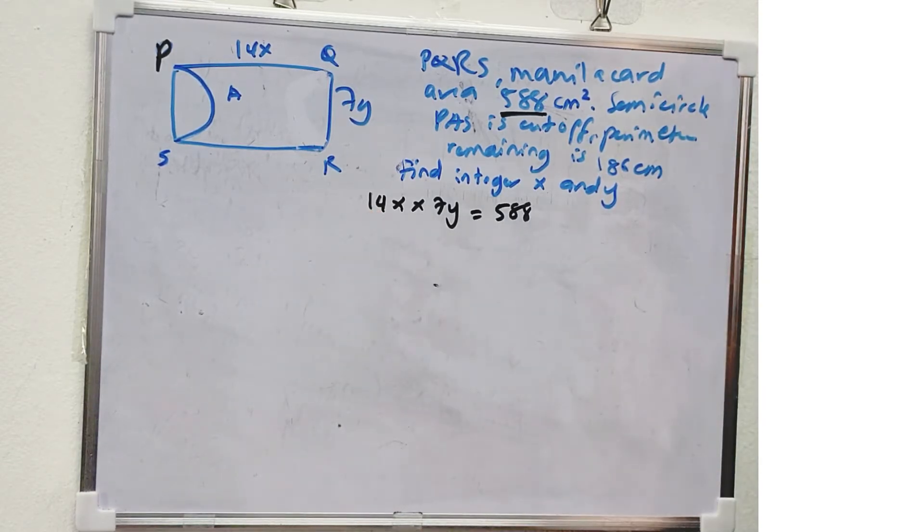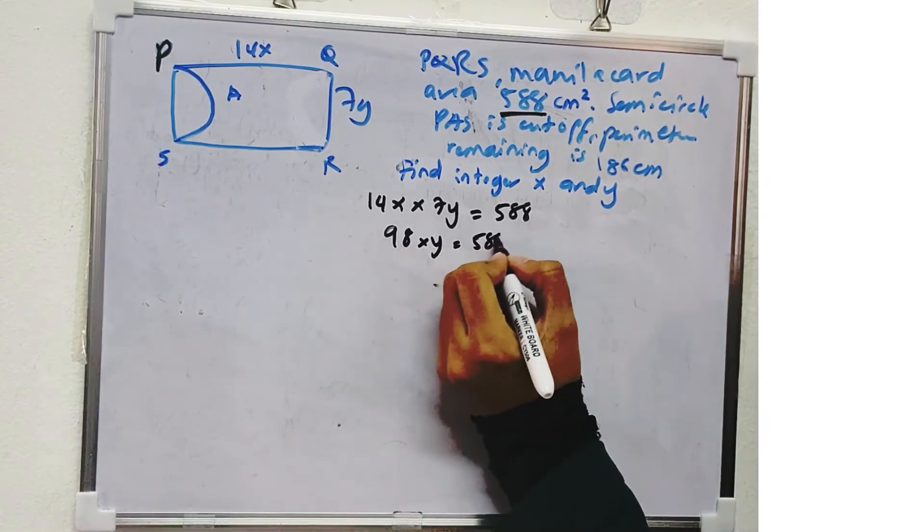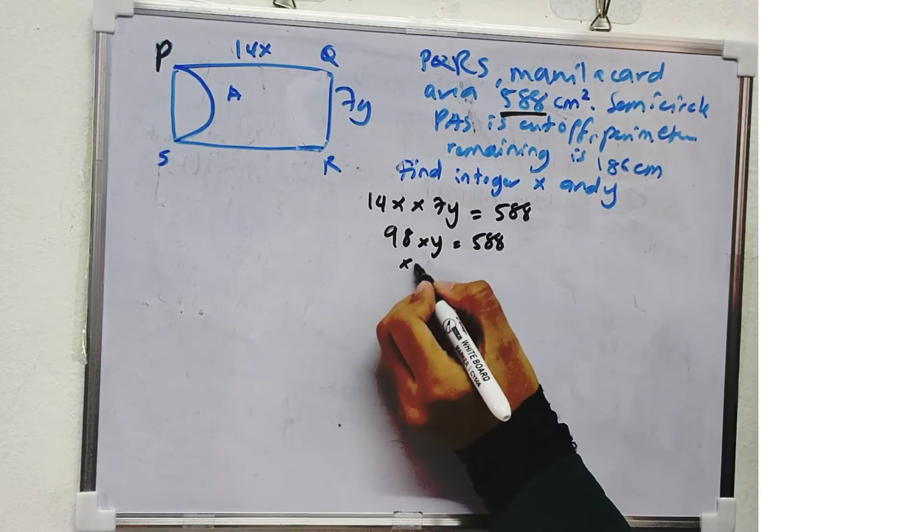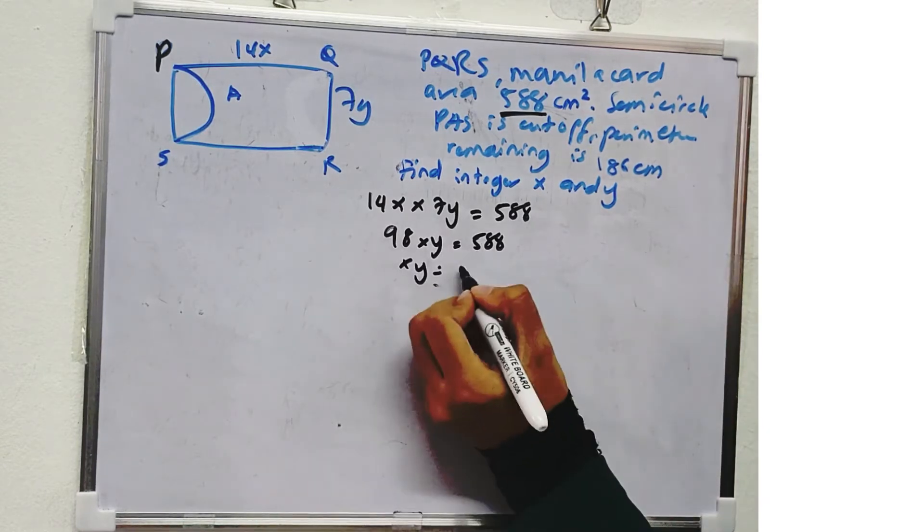14 times 7, or 98XY is equal to 588. So XY is equal to 588 divided by 98. So we have XY is equal to 6.